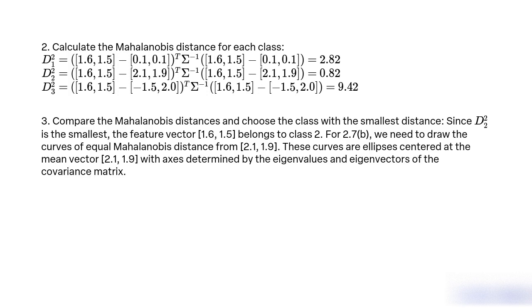Step 3: Compare the Mahalanobis distances and choose the class with the smallest distance. Since D_2^2 is the smallest, the feature vector [1.6, 1.5] belongs to class 2. For problem 2.7(b),